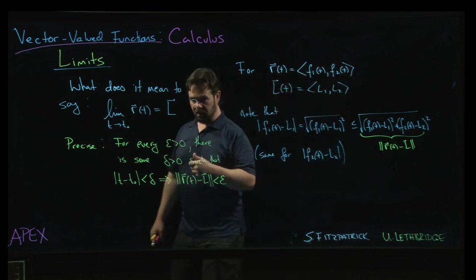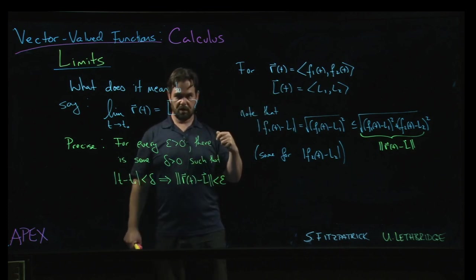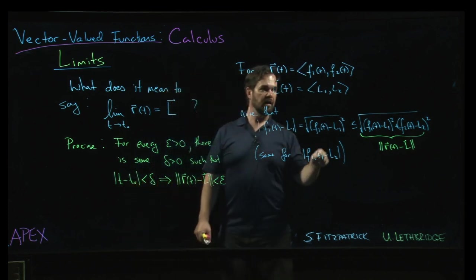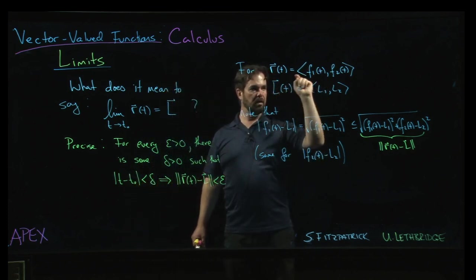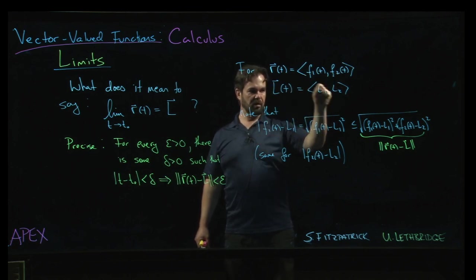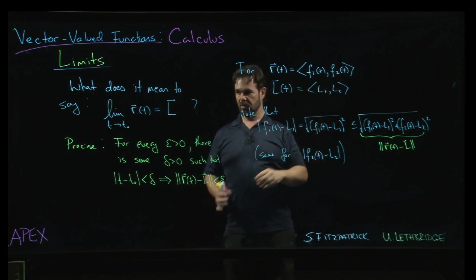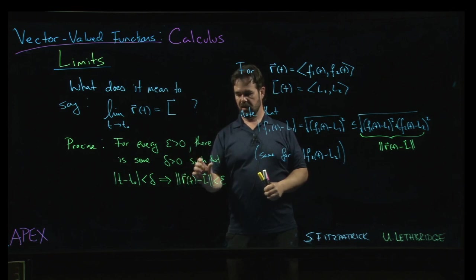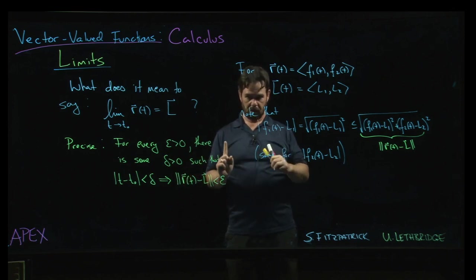And with a little bit more work, you can turn it around and go the other way and say: if the limit of f1 is equal to L1 and the limit of f2 is equal to L2, then you can show that the limit of r(t) is equal to L.